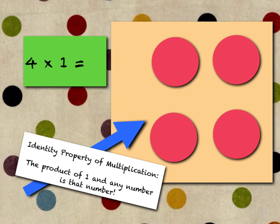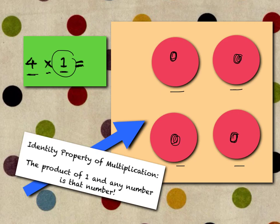Let's test that theory. Let's look at four times one. How many groups do we have? Four groups — one, two, three, four groups of one. So let's put one in each group. If we have four groups with one in each group, how many total do we have? One, two, three, four. Our total number is four. So four times one equals four — it equaled itself. The product of one and any number is that number.